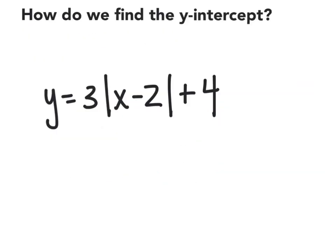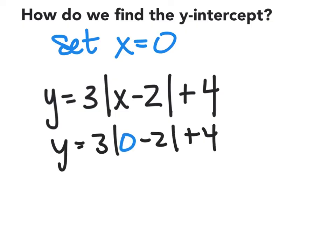Let's think about how do we find the y-intercept. At a y-intercept, that's where it hits the y-axis, x equals 0. So we're going to set x equal to 0. That leaves me with y equals 3 times the absolute value of 0 minus 2 plus 4. So that's 3 times the absolute value of negative 2 plus 4. What's the absolute value of negative 2?